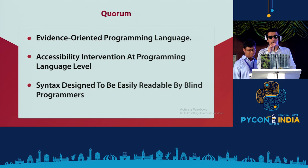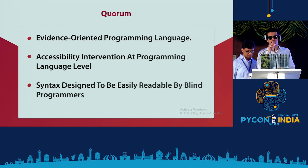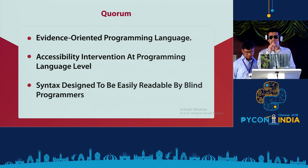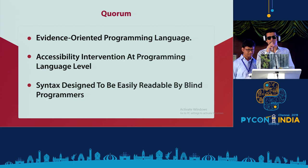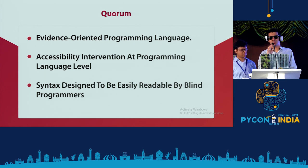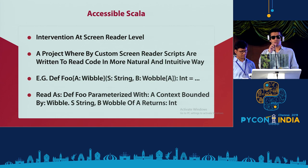Quorum is a programming language with an evidence-oriented programming design. They look for new features through research and user survey studies to find out how to design the language so it's accessible to all users. They conducted user studies with blind people when designing the language. For example, Quorum's for loop syntax is something like 'repeat 10 times,' so instead of reading left brackets and parentheses, you can understand it more intuitively.